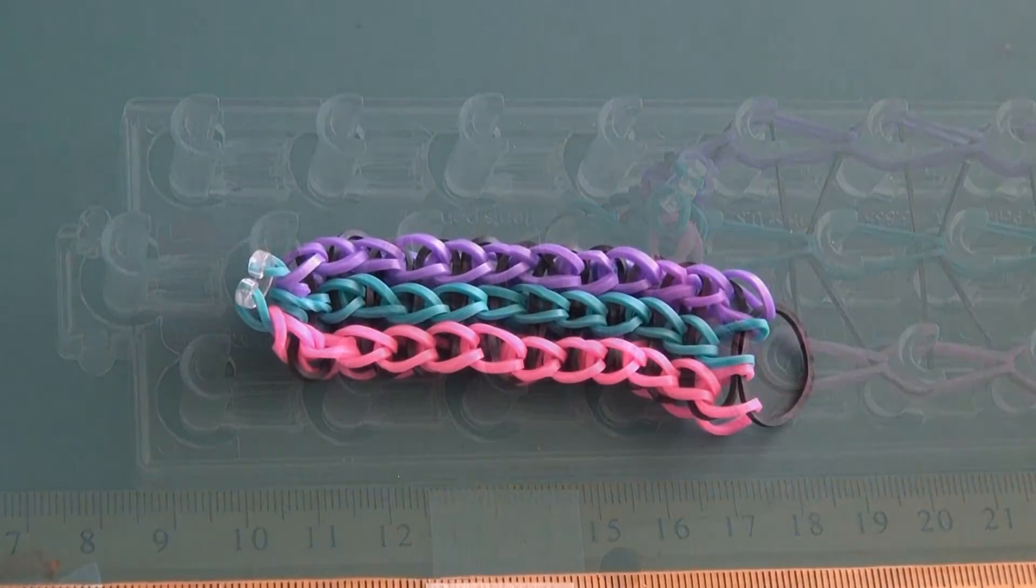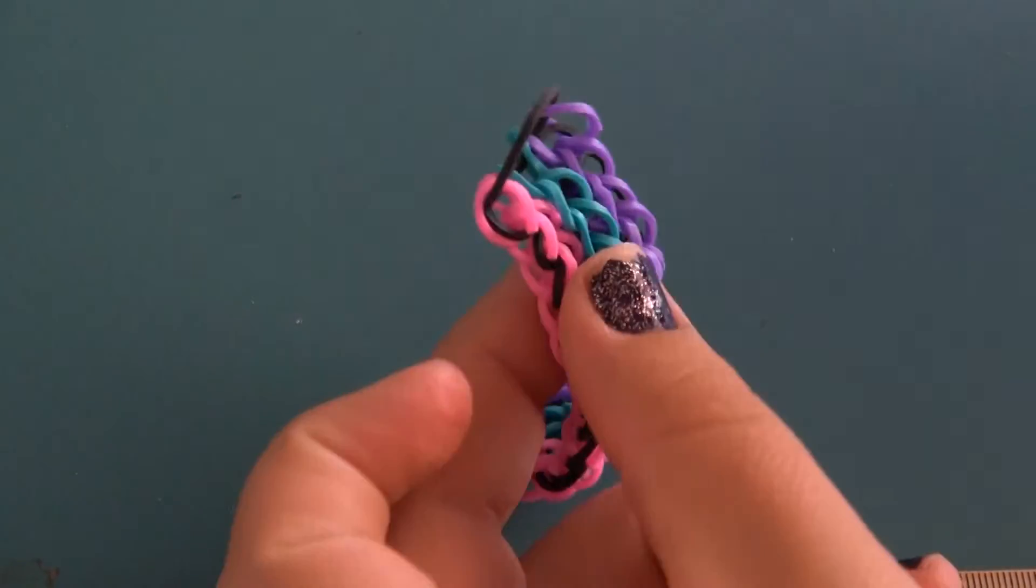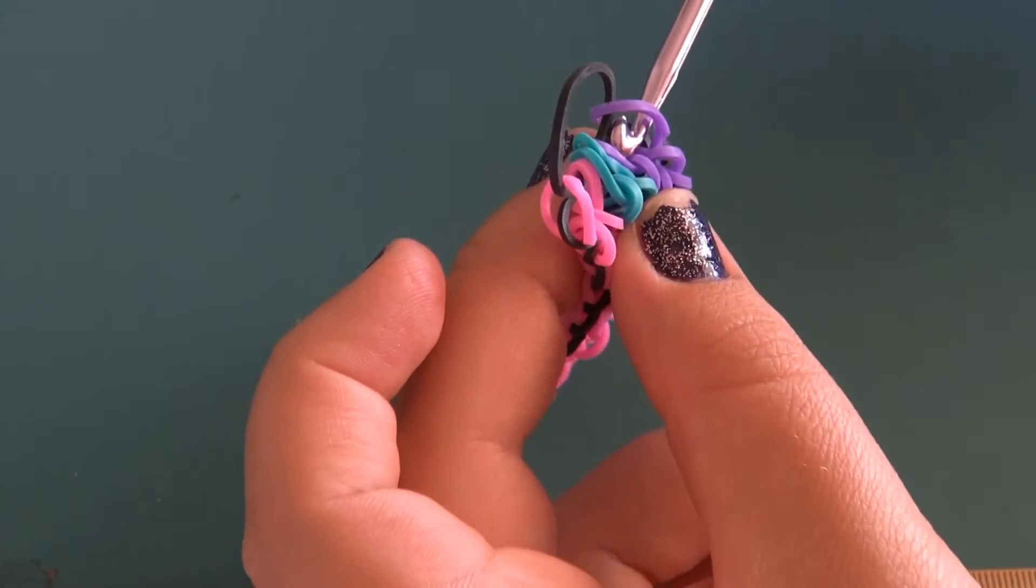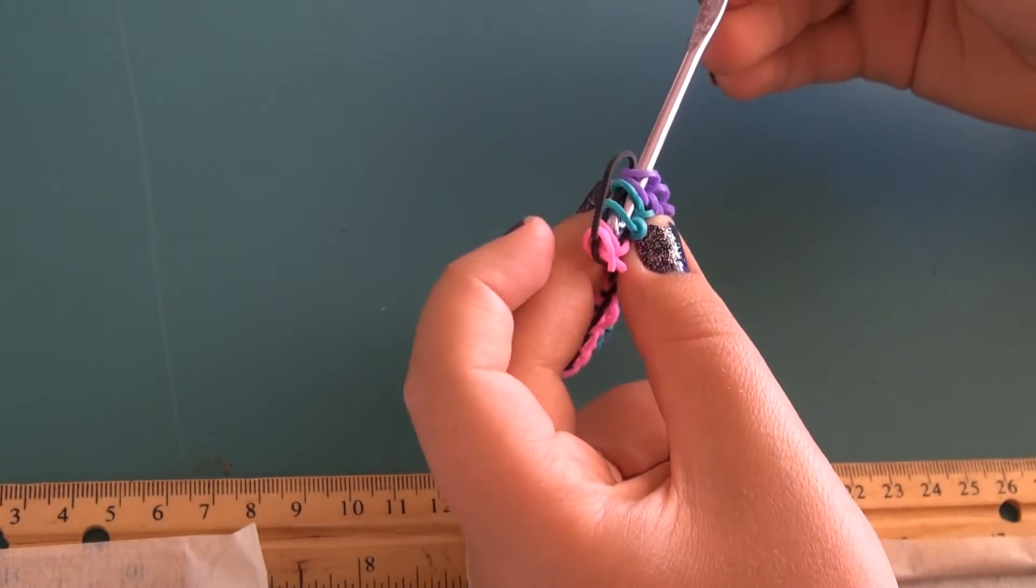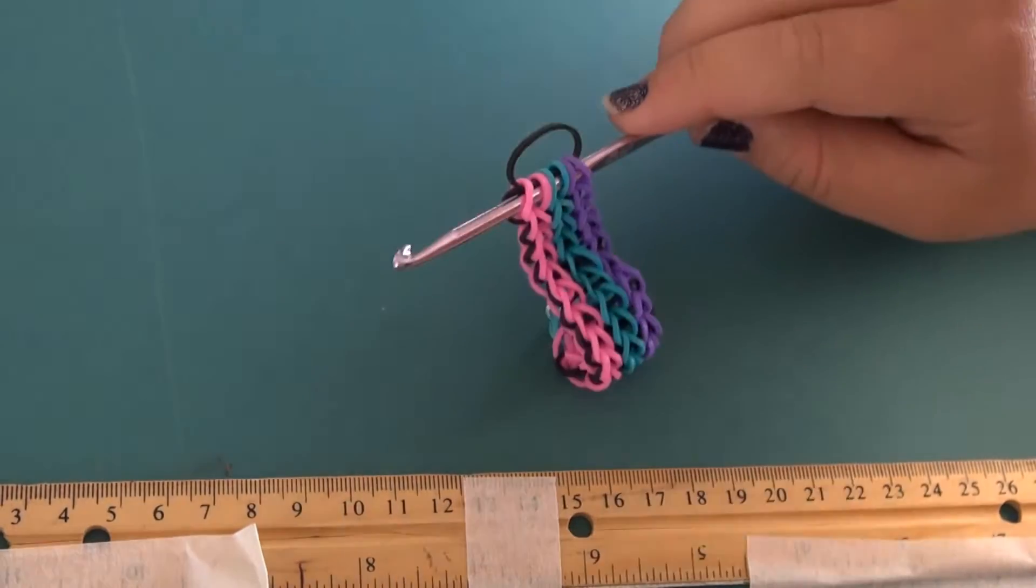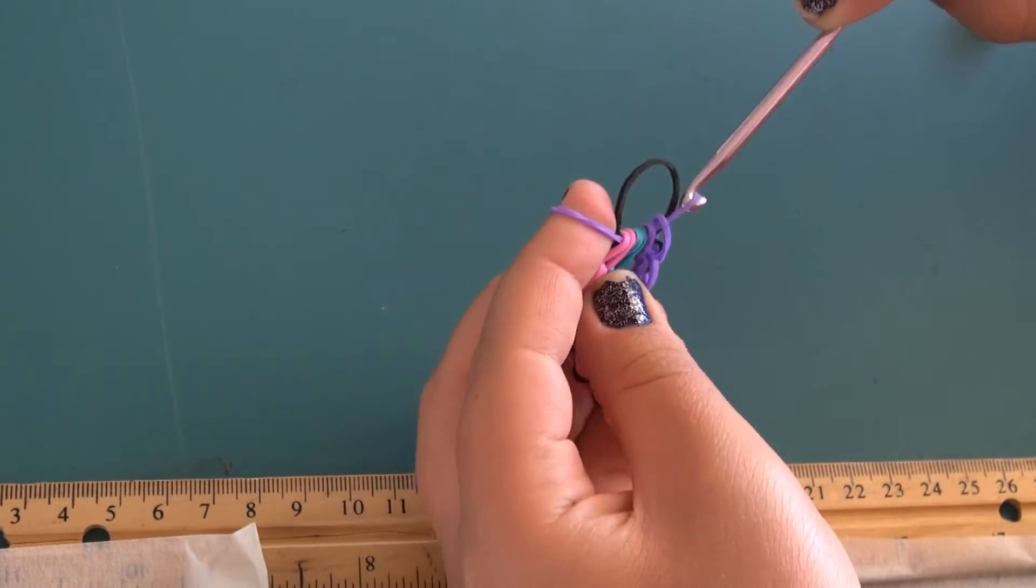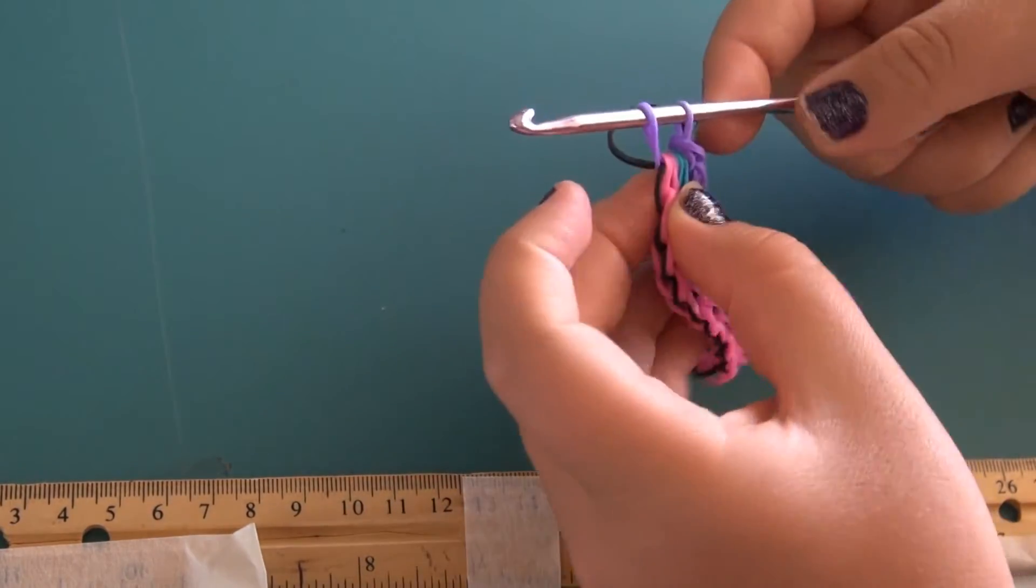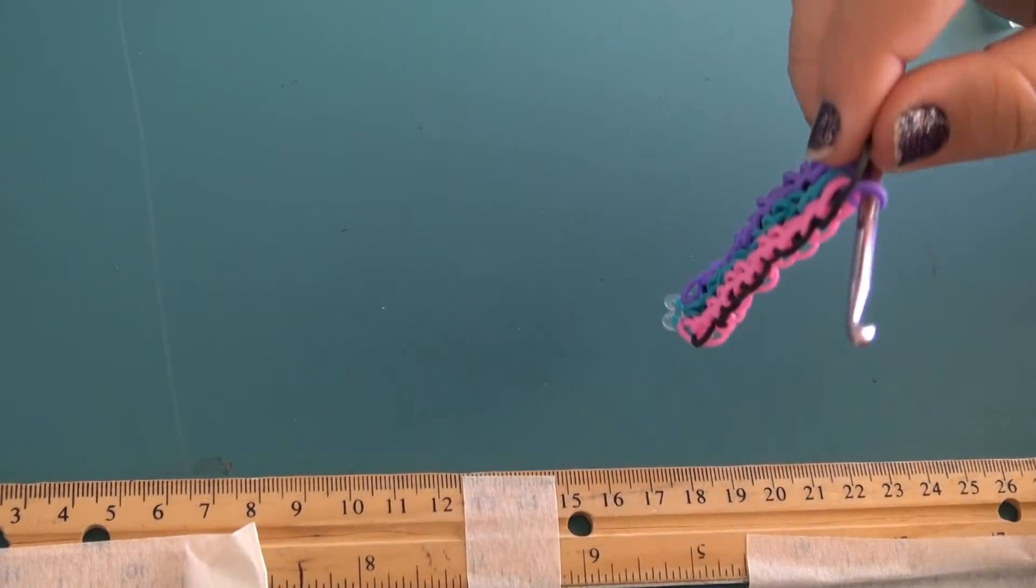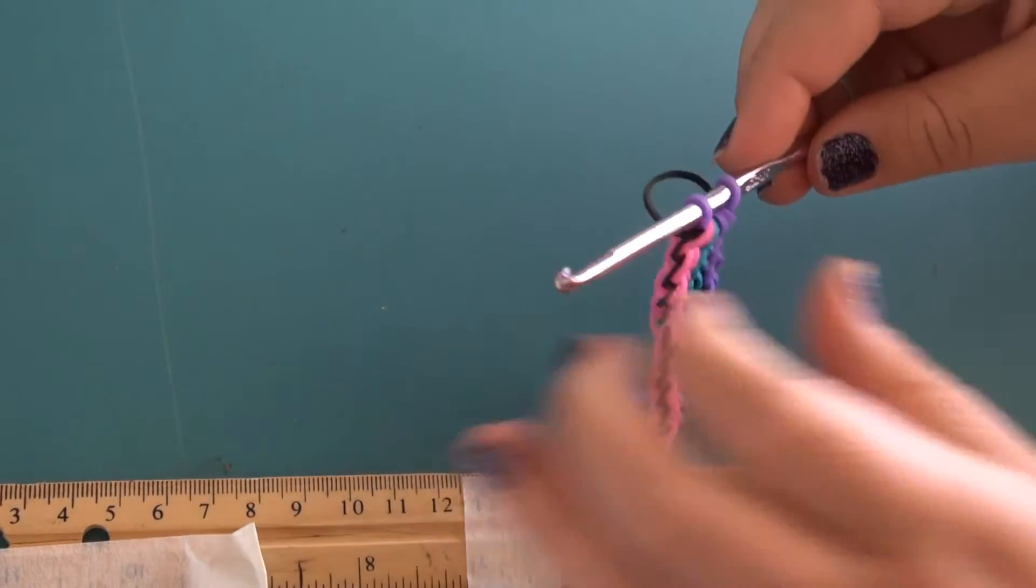I have now got it off the loom and now we are going to make the extension. To make the extension, this side with the loose black band, you put your hook through all three colors. And once you get that through, then you are going to pull a band through those. And you hold your hook on the other side like that. Then you are going to need to cut this black band off, but do not cut it off until you have done that step.